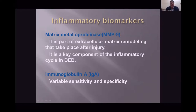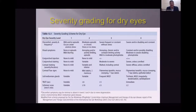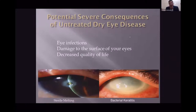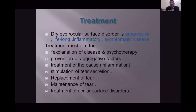Based on symptoms and signs, dry eye severity can be graded into levels 1 through 4. If untreated, dry eye can lead to eye infections such as bacterial keratitis, damage to the ocular surface, stromal melting, and ultimately blindness, as well as decreased quality of life. Dry eye is a progressive, lifelong inflammatory symptomatic disease.